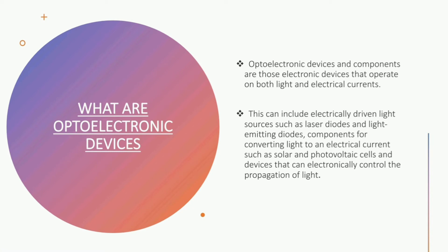So what exactly are Optoelectronic Devices? Optoelectronic devices and components are those electronic devices that operate on both light and electrical currents. This can include electrically driven light sources such as laser diodes and light emitting diodes, components for converting light to an electrical current such as solar and photovoltaic cells, and devices that can electronically control the propagation of light.